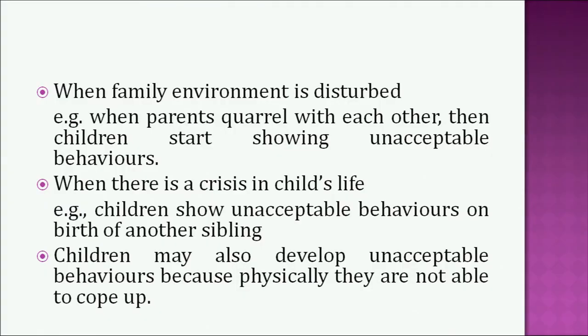A disturbed family environment is another reason for a child's misbehavior — when the child sees parents quarreling with each other, the child starts showing unacceptable behavior. When there is crisis in a child's life — for example, the birth of another sibling — children may show unacceptable behavior because they feel all the attention is being taken away and given to the new sibling. Children may also develop unacceptable behavior because physically they are not able to cope with the demands of the situation around them. We need to be very careful about these little things concerning children.